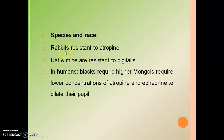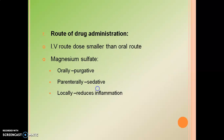Next is species and race. Various species will affect drug action — for example, rabbits are resistant to atropine, and rats and mice are resistant to digitalis. Blacks require higher doses of certain drugs, while Mongols require lower concentrations of atropine to dilate their pupils.